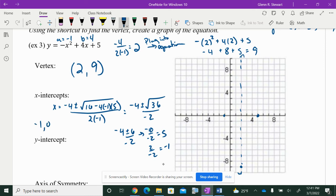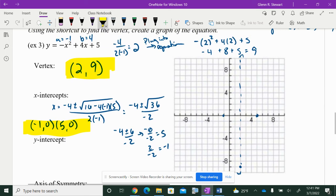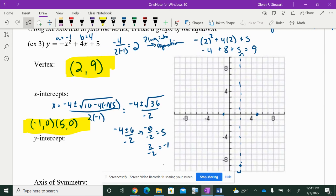You get 5, you get negative 1, 2, 9, which is my axis of symmetry. This here, negative 1 comma 0, 5 comma 0. You can also try and factor if you want to. That was actually factorable if you pull out the negative. But, again, using the quadratic formula when you're in this form will help.